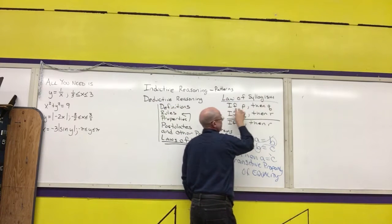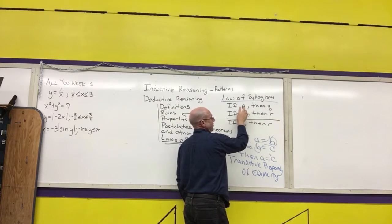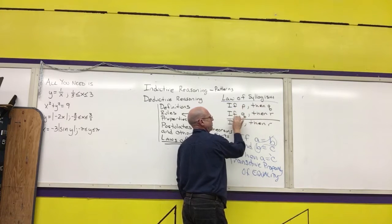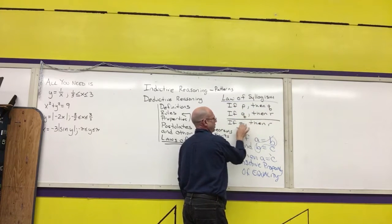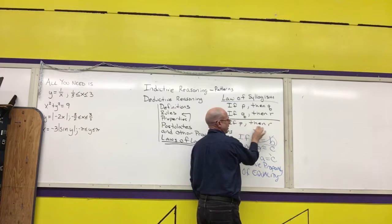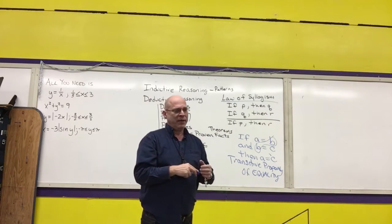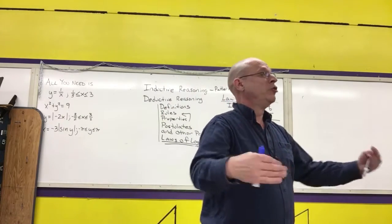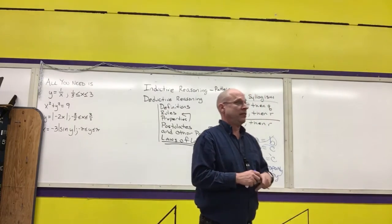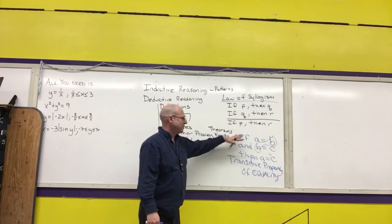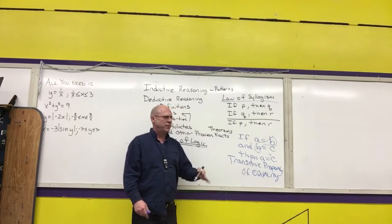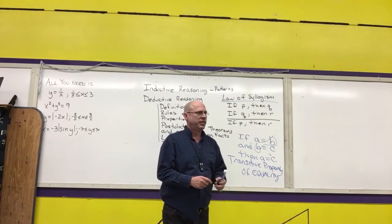So the law of syllogism states that if you have a statement that says if P, then Q, and another one if Q, then R, that implies if P, then R. There will be examples of you needing to be able to use the law of syllogism. Or to identify whether or not you're using the law of syllogism. So any time you've got something that looks kind of like the transitive property, that is the law of syllogism.